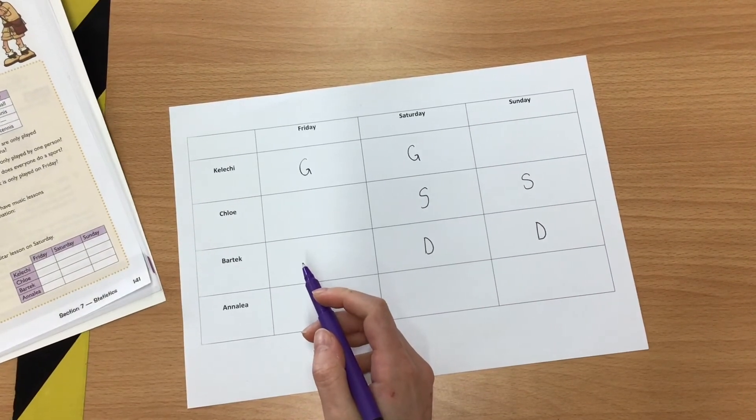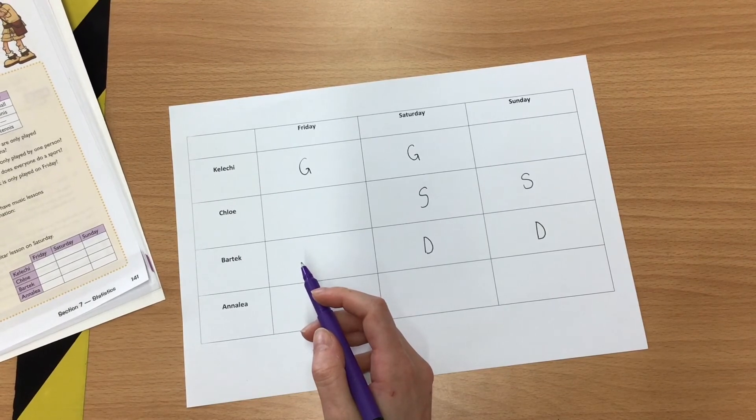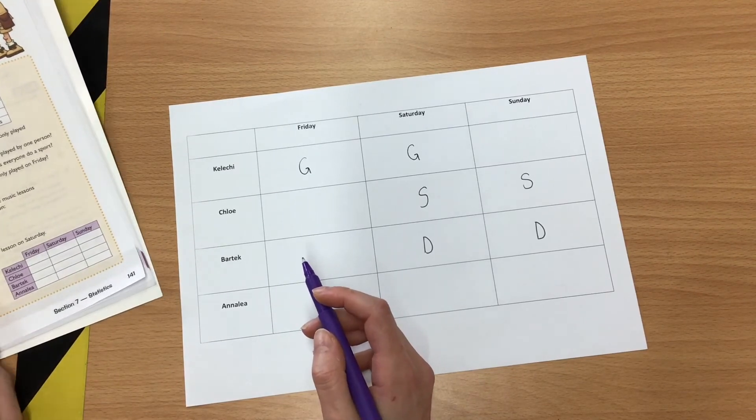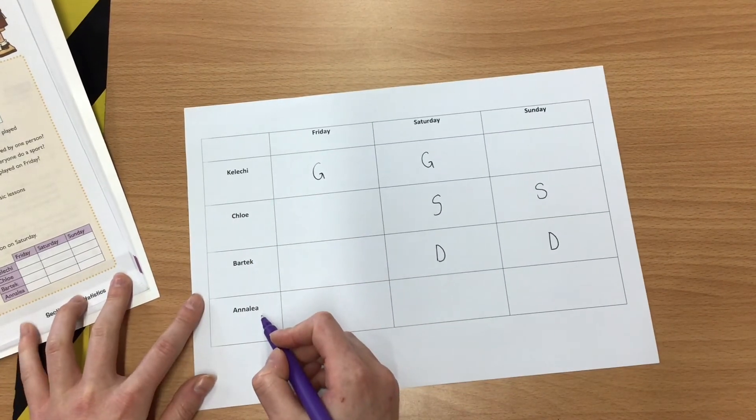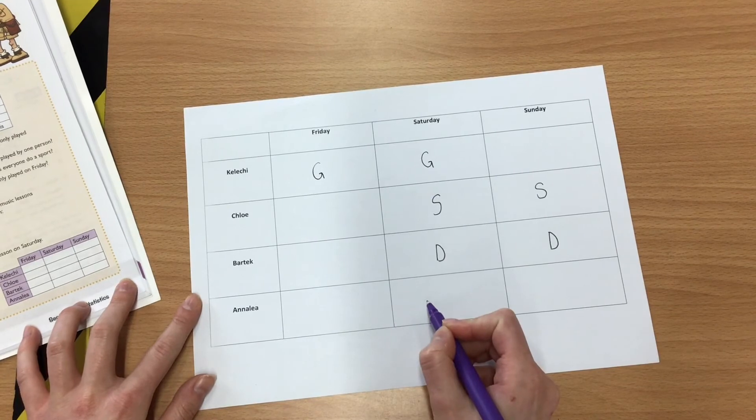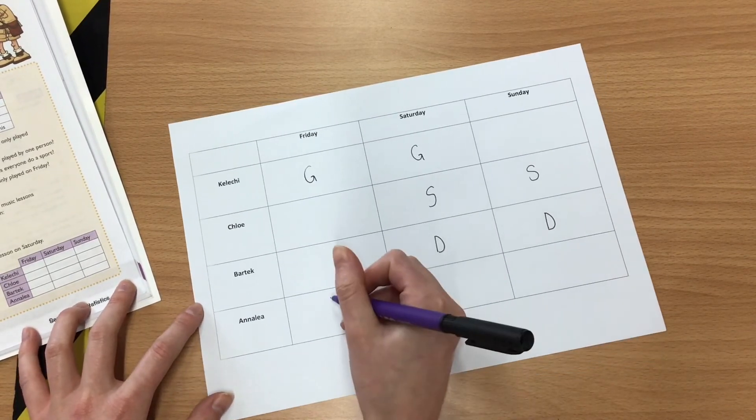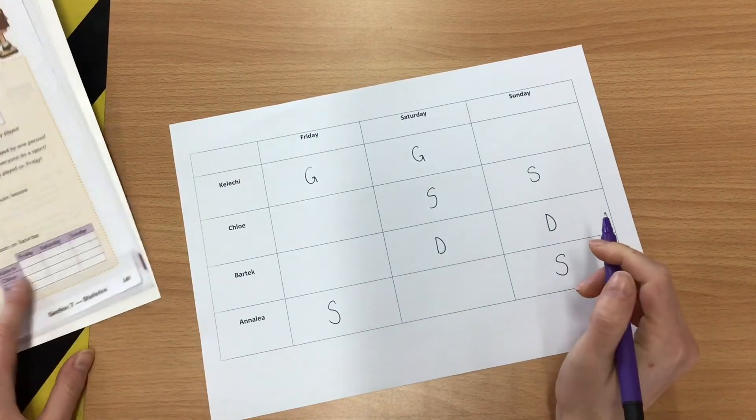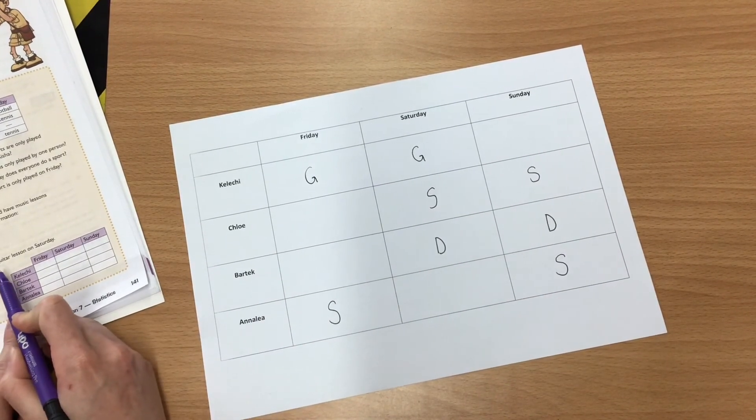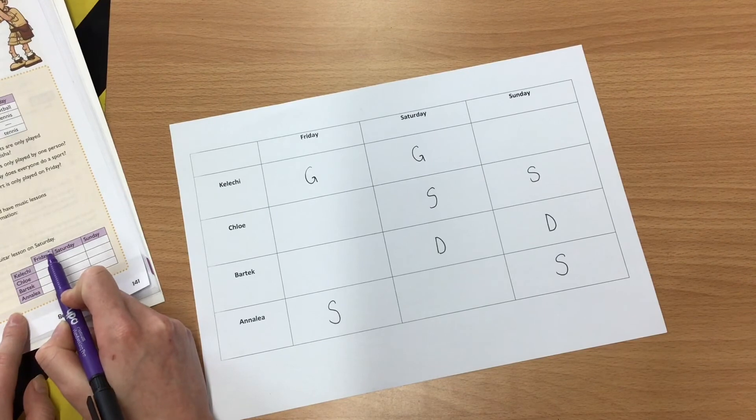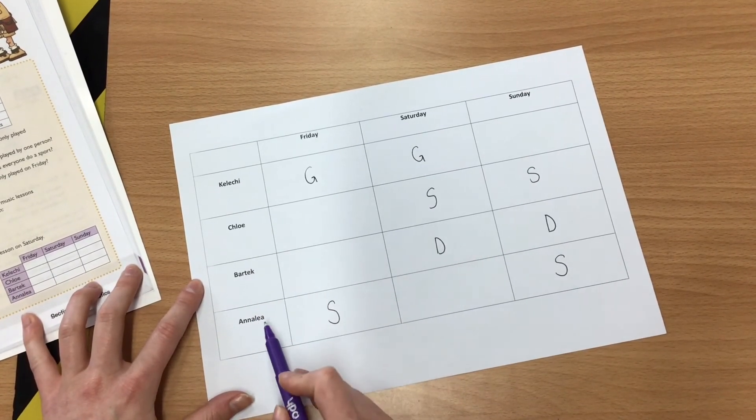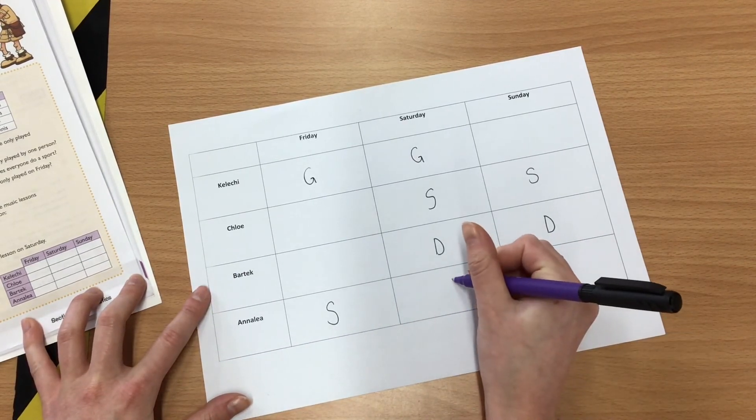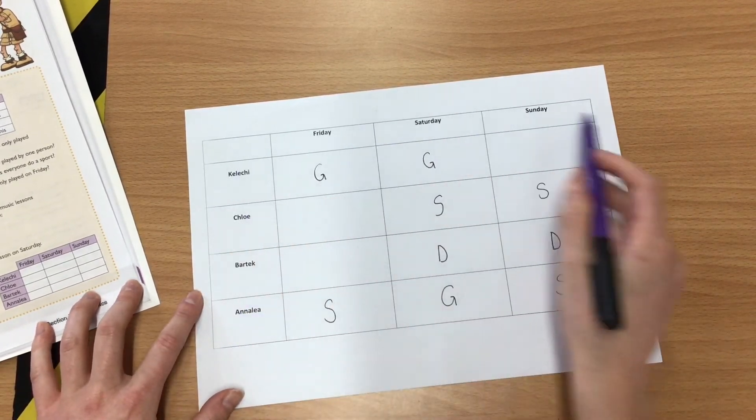My last point says, Analia has a singing lesson on Friday and Sunday. So that's my first point. So I go down to Analia and I go across to Friday and Sunday. So I put singing for Friday and Sunday. And the second part says she also has a guitar lesson on Saturday. So I'm going to go down again for Analia and I'm going to go across to Saturday, and I'm going to put a G for guitar.